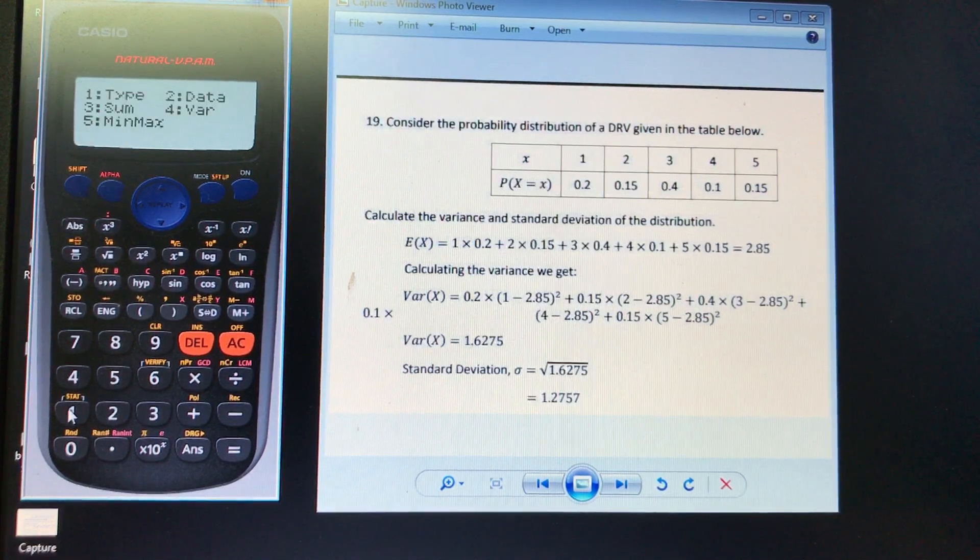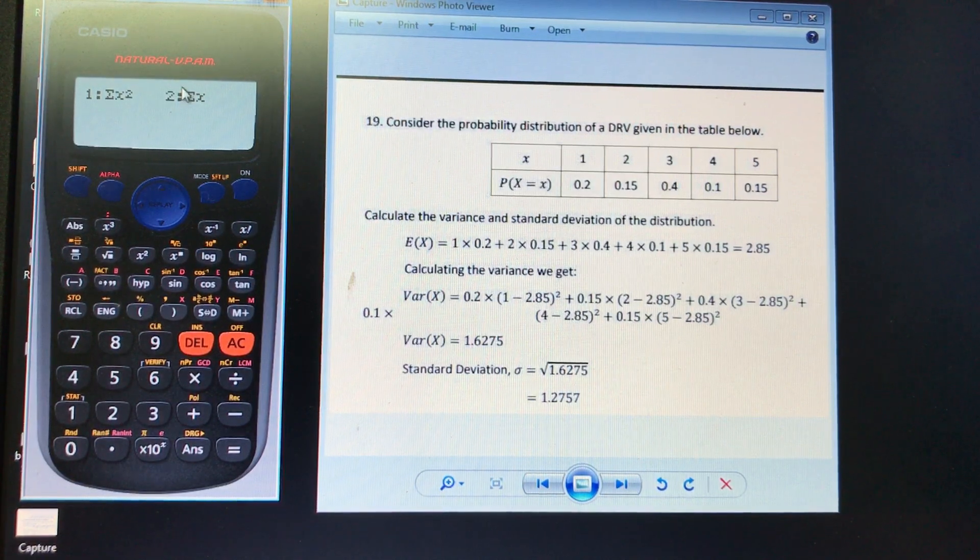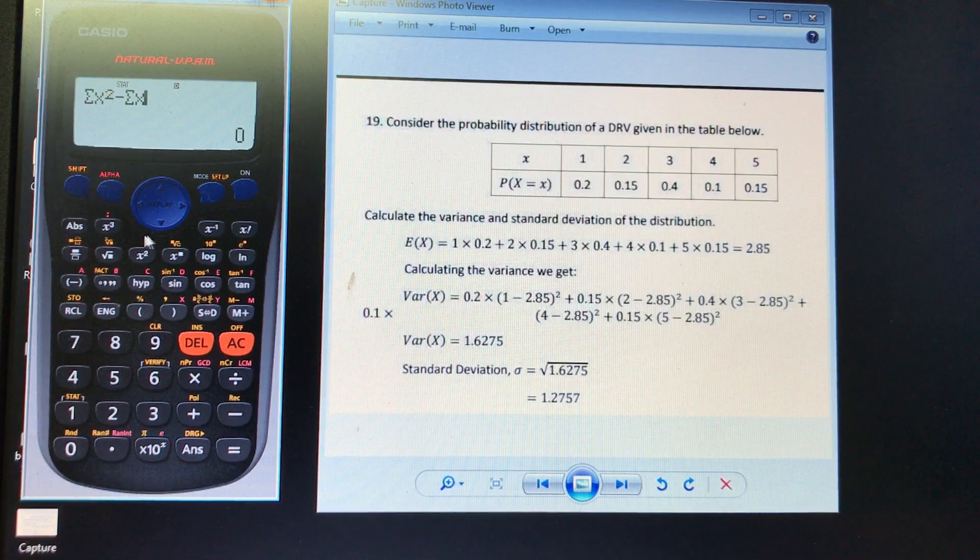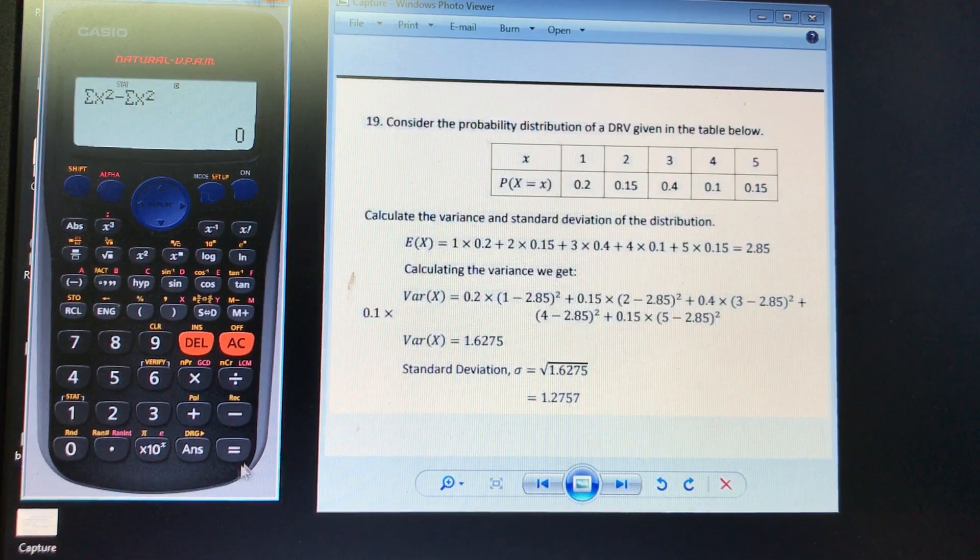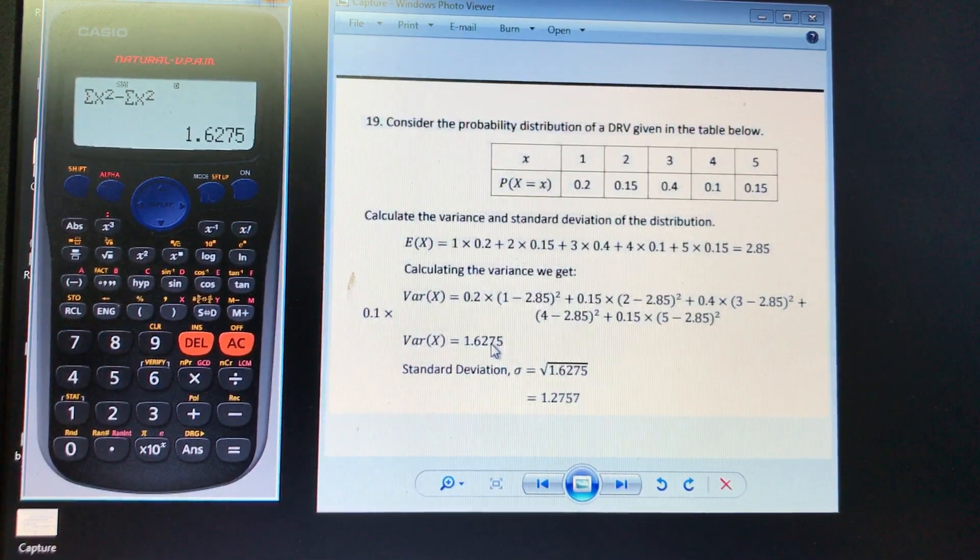So going shift 1 again, going to 3, going to 2, picking our expected value, and squaring, squaring it. And we press equals. And here you can see I can get my variance.